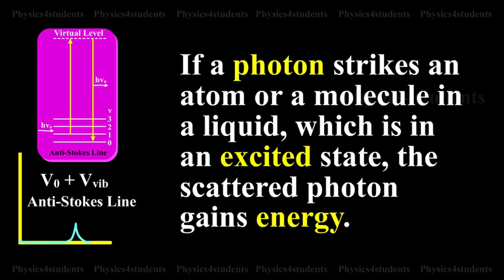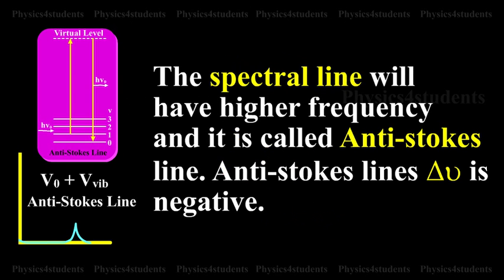If a photon strikes an atom or a molecule in a liquid which is in an excited state, the scattered photon gains energy. The spectral line will have higher frequency and it is called anti-Stokes line. For anti-Stokes line, del nu is negative.